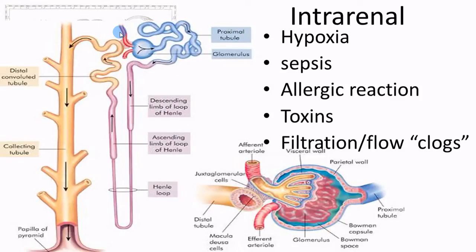For intrarenal disease, think about the functional unit of the kidney — the nephron. Consider the structures: it could be the tubules or the glomerulus being damaged. These blood vessels are single-cell thick and can easily get blown out. The tubules are also typically single-cell thick, so they can be damaged very easily too.